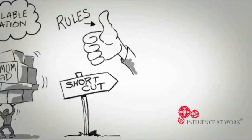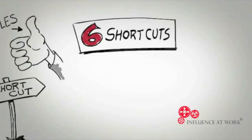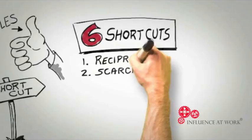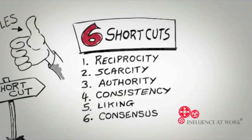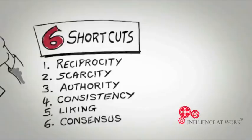My own research has identified just six of these shortcuts as universals that guide human behavior. They are reciprocity, scarcity, authority, consistency, liking, and consensus. Understanding these shortcuts and employing them in an ethical manner can significantly increase the chances that someone will be persuaded by your request. Let's take a closer look at each in turn.